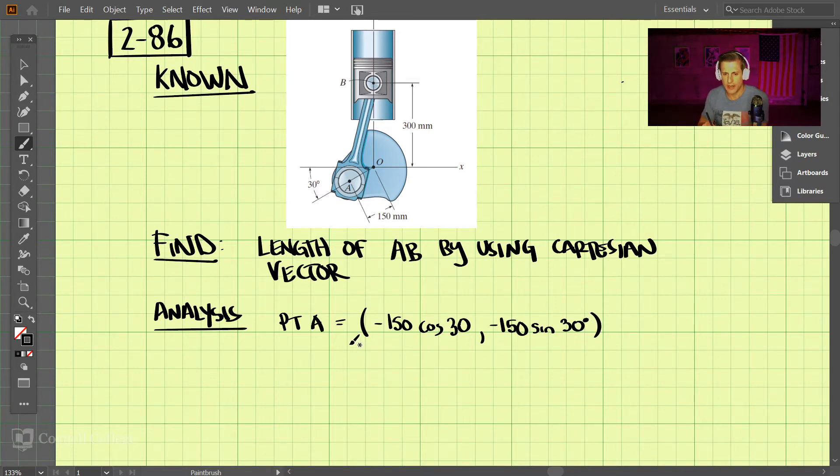And now we don't have a z component, so we can move on to point B. Point B is here, and x is easy. It lays right on the y-axis here, so x is zero. And y is 300 millimeters upward. So 300, zero and 300 for point B.